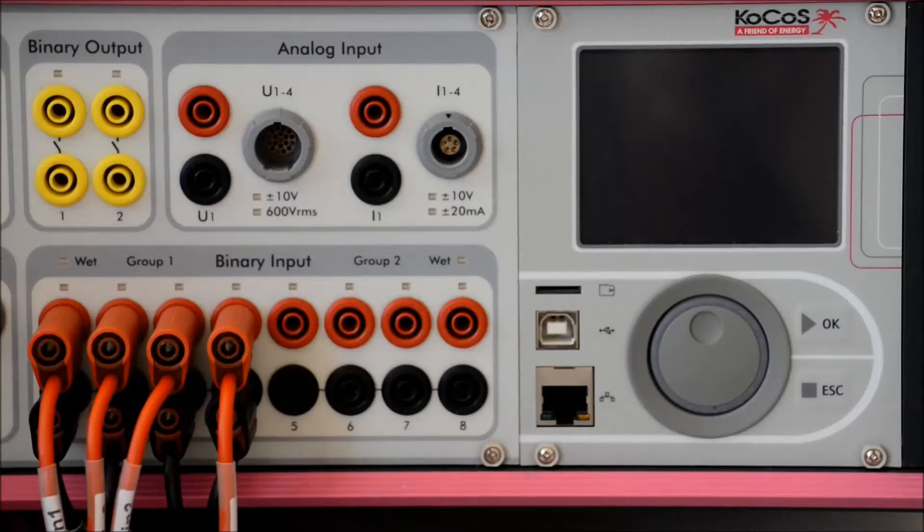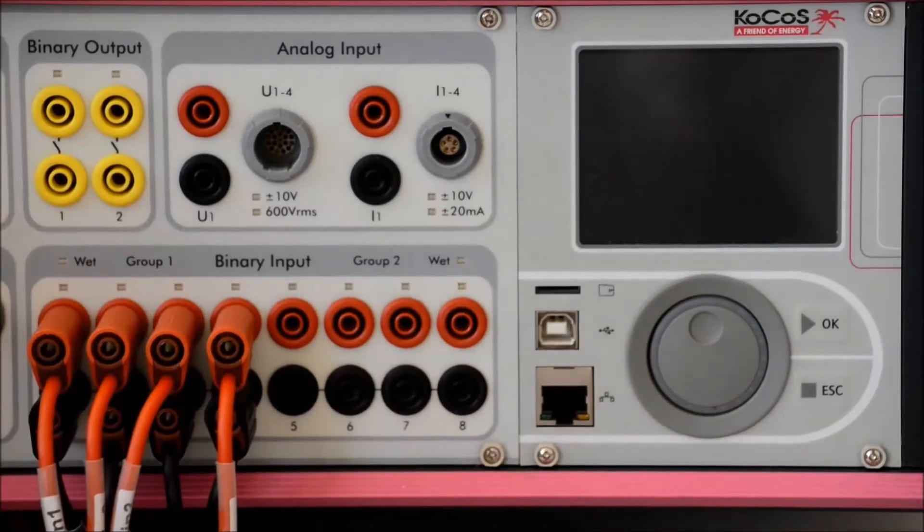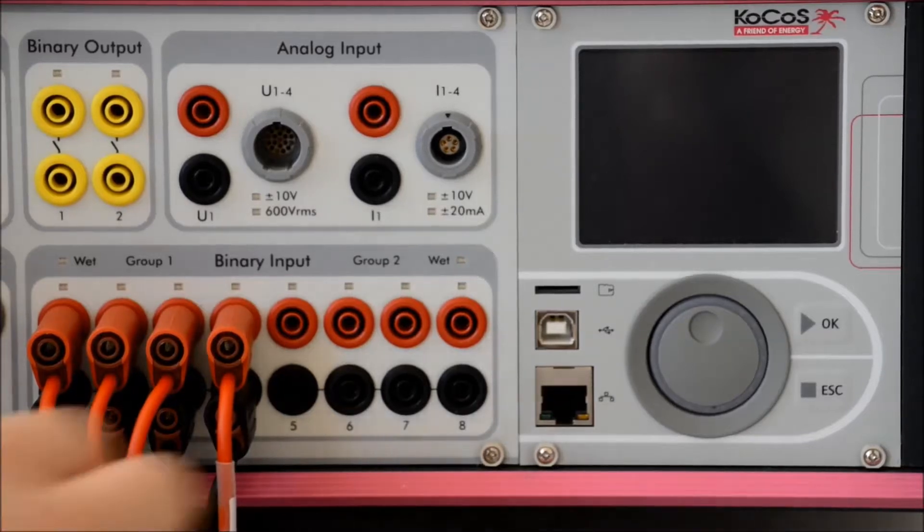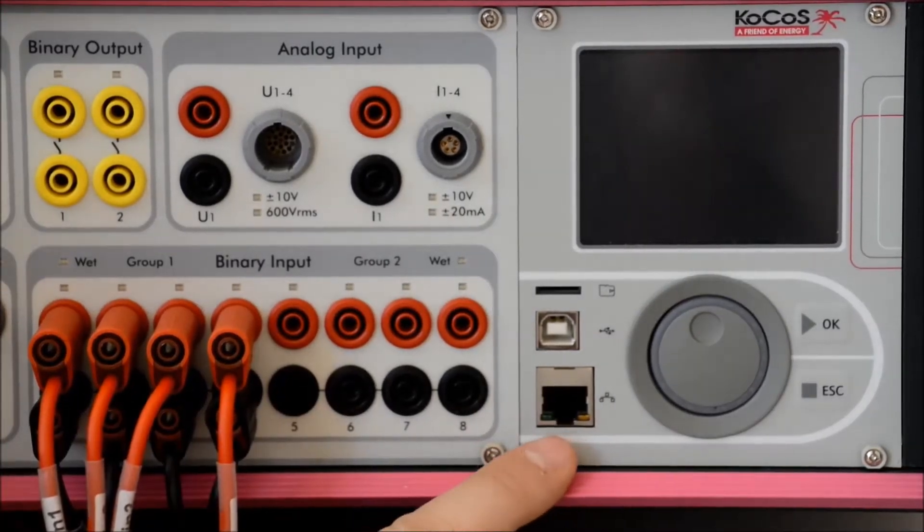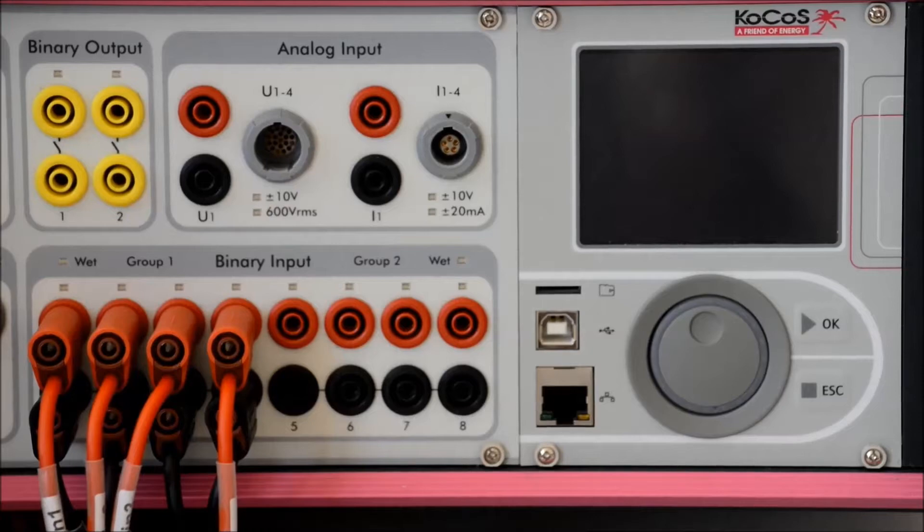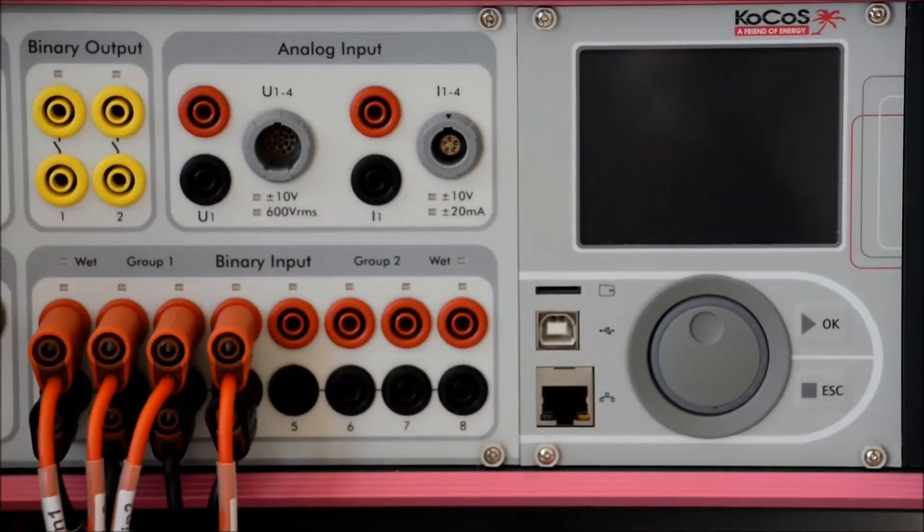It includes two functional keys which serve as start and stop, and also for saving and navigation purposes. Additionally, we have two communication ports, one is USB and one is Ethernet. Also we feature a microSD slot, which I will be explaining in another video.